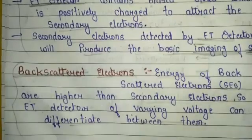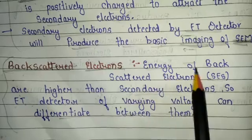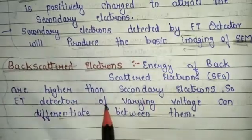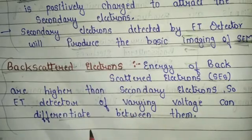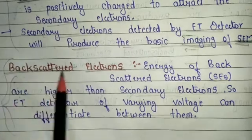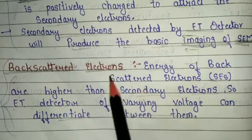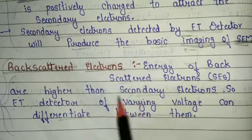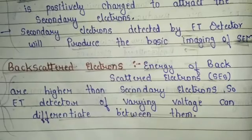The second detection in SEM is backscattered electrons. The energy of backscattered electrons is higher than that of secondary electrons. An ET detector of varying voltage can differentiate between them. This is the basic difference between backscattered electrons and secondary electrons.